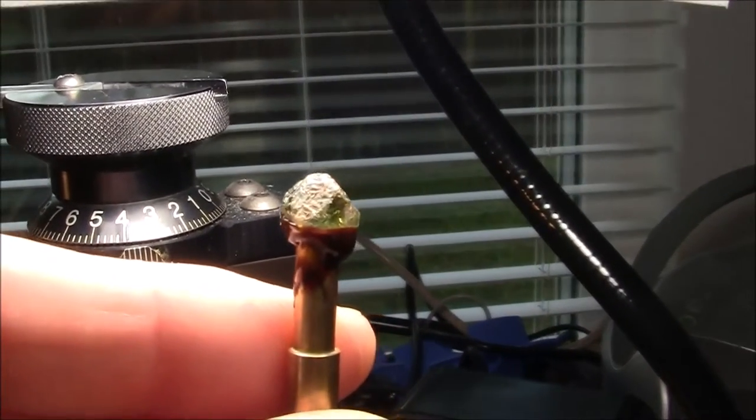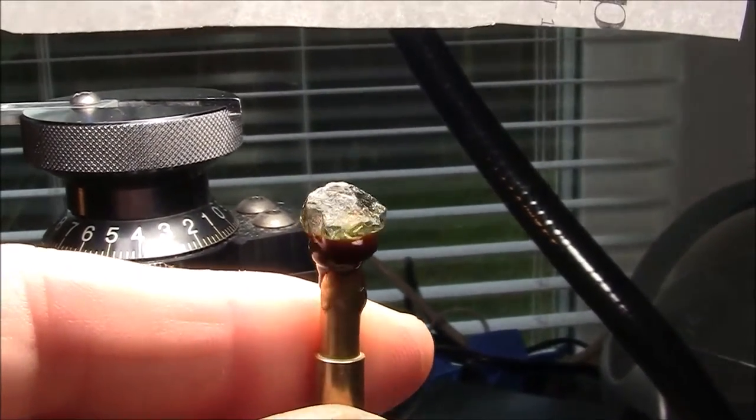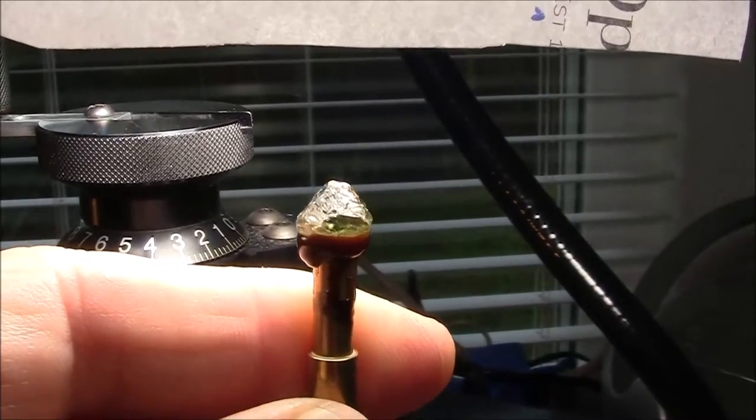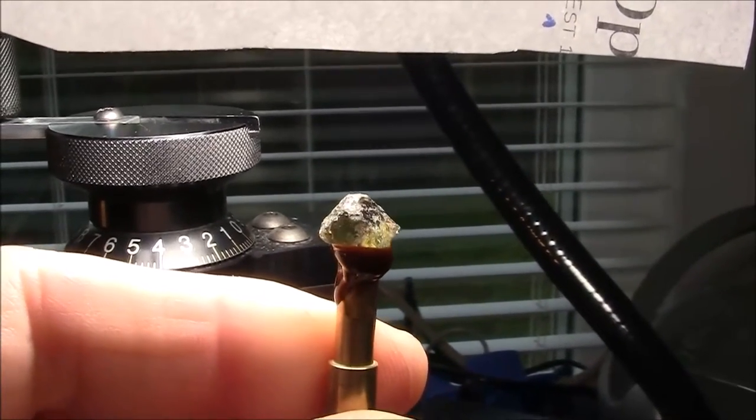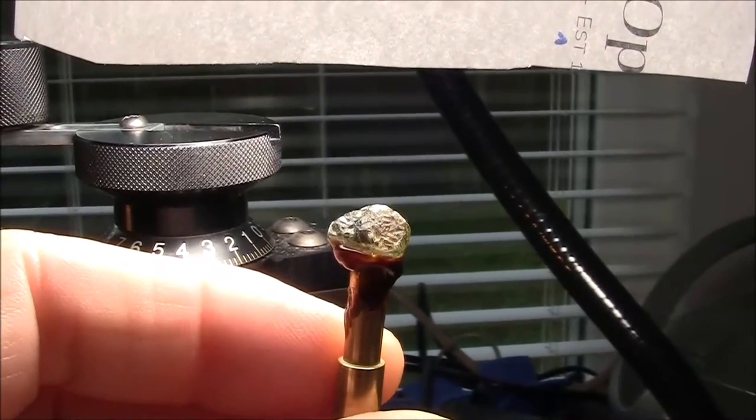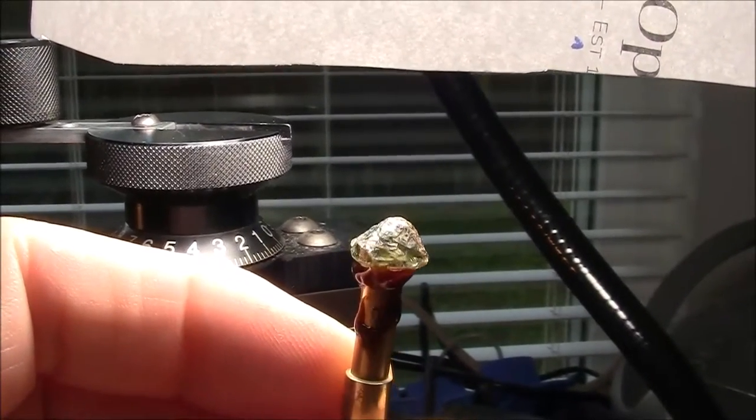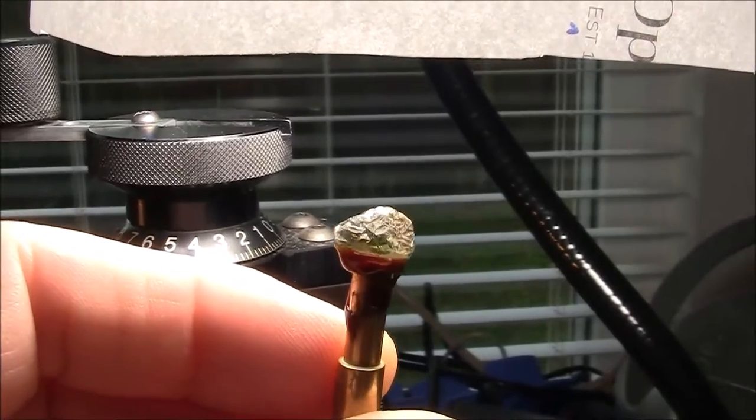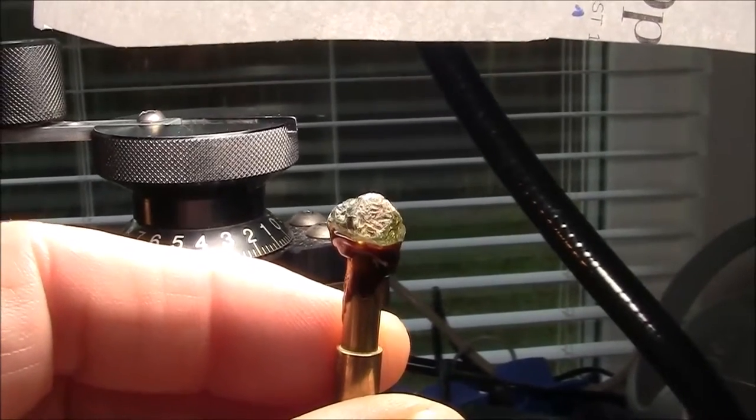Here I've got the stone dopped and ready to cut. I'll put it in the machine and start the rounding process first. I'll get a completely round stone, and then I'll start cutting the pavilion facets to a culet point.